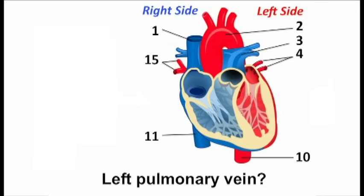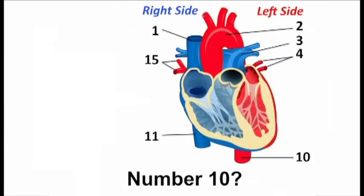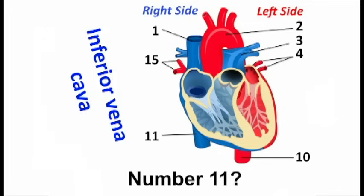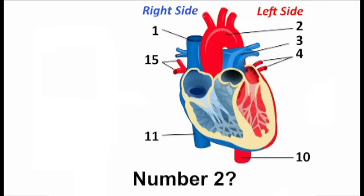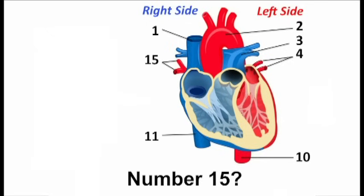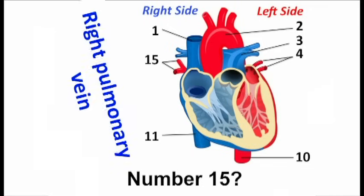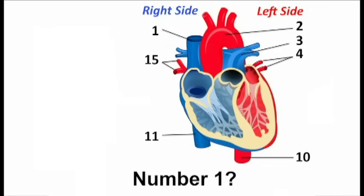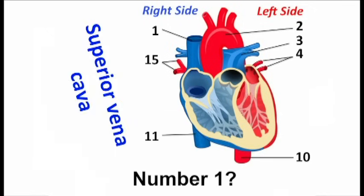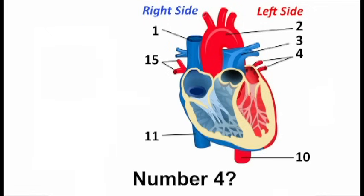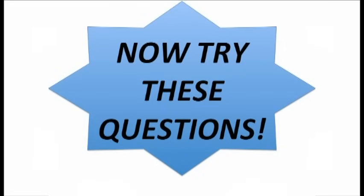Left Pulmonary Vein. Name the part: number 10, number 11, number 2, number 3, number 15, number 1, number 4.